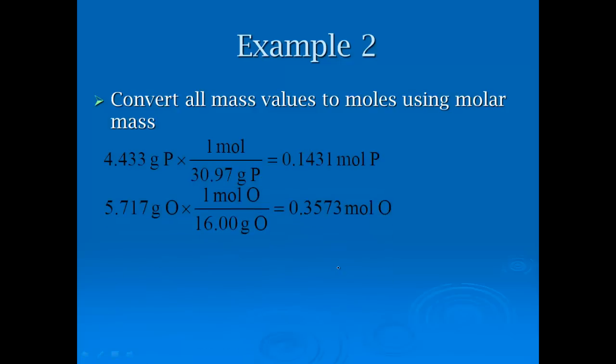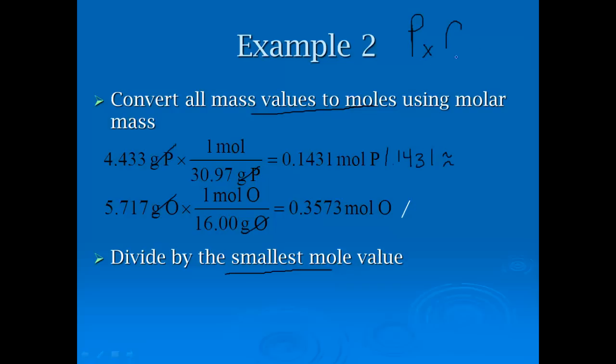We convert the mass values to moles. We had grams of phosphorus to moles by dividing by the molar mass, grams of oxygen to moles by dividing by the molar mass. The next step, once we go grams to moles, is to then divide by the smallest value, which is 0.1431. We're looking for whole numbers because we're trying to solve for those X values, and they have to be whole numbers.